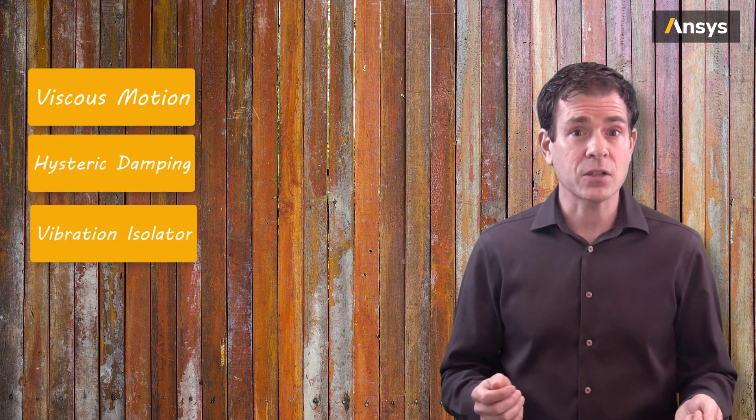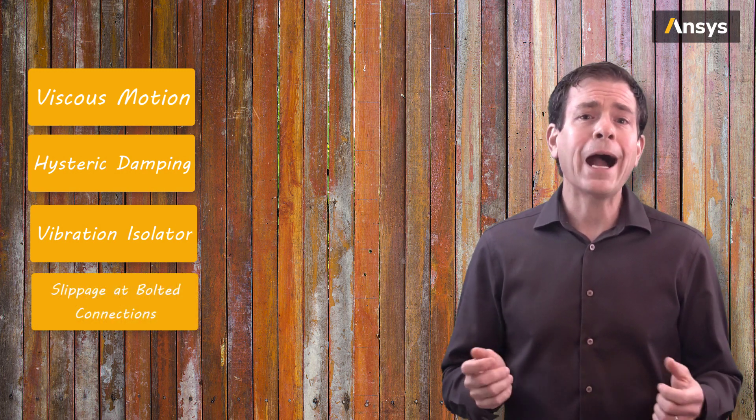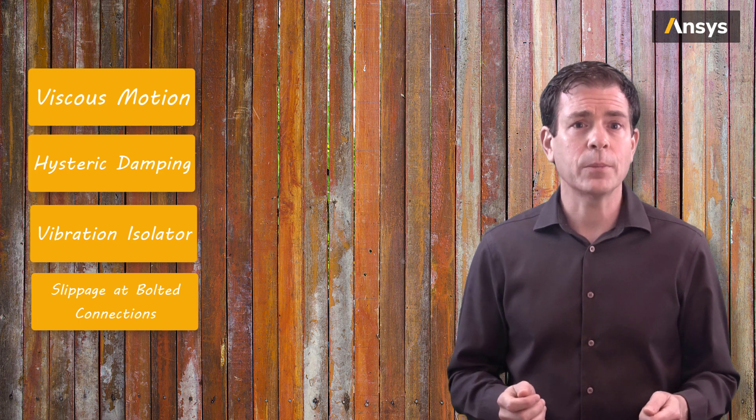A tall building following an earthquake may sway from the excitation. The natural decay in the motion of a building after a seismic event may come from the viscous motion of the building against the air, the hysteretic damping of the steel material, energy dissipated in the vibration isolator if it has one, and even the slight slippage of bolted connections. But knowing how much for each of these physical phenomena may not be easily determined.